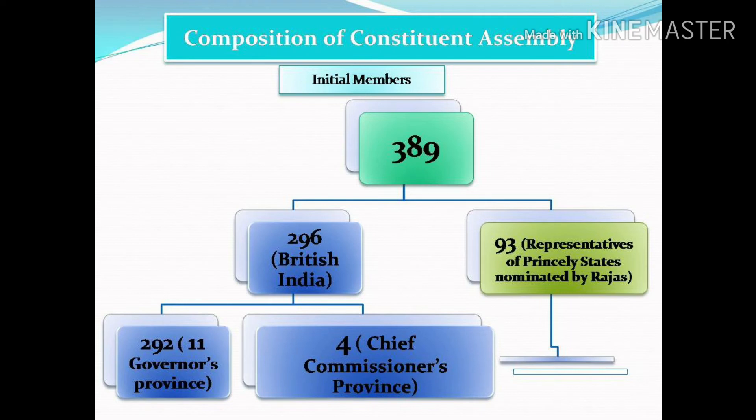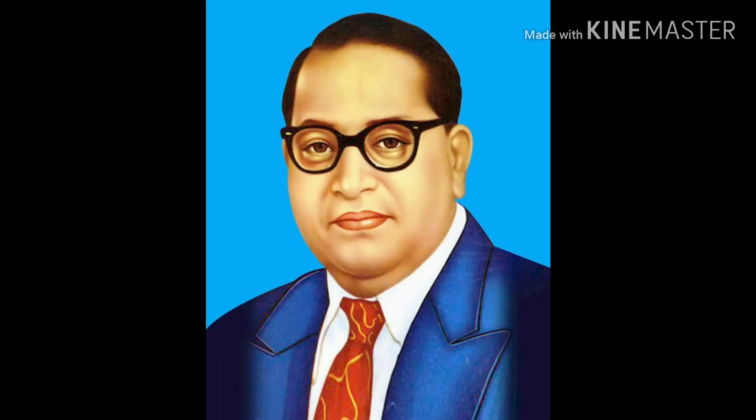Out of 389 seats: 93 were representatives of the Princely States, 292 were from governor provinces, and 4 were from chief commissioner provinces.